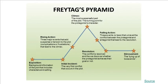One structure that's useful for thinking about longer form storytelling is Freytag's pyramid, which maps quite neatly onto Cortazzi's structure. We have an exposition stage similar to the orientation phase, an initial incident similar to the complication, a resolution similar to the result, and a denouement similar to the coda. But in the middle we have three different parts corresponding to the evaluation stage: rising action, a climax, and falling action.